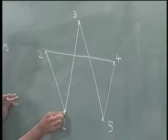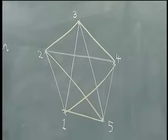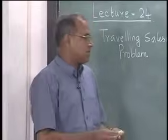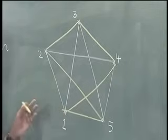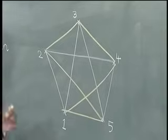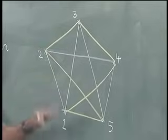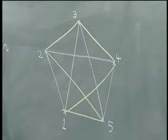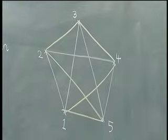Alternatively, another feasible solution could be: 1 to 4, 4 to 3, 3 to 2, 2 to 5, and 5 to 1. Any permutation or order in which the person starts from a given node, visits every other node once and only once, and returns to the starting point is called the traveling salesman problem. The objective is to find the tour or circuit which gives minimum distance or minimum cost traveled.